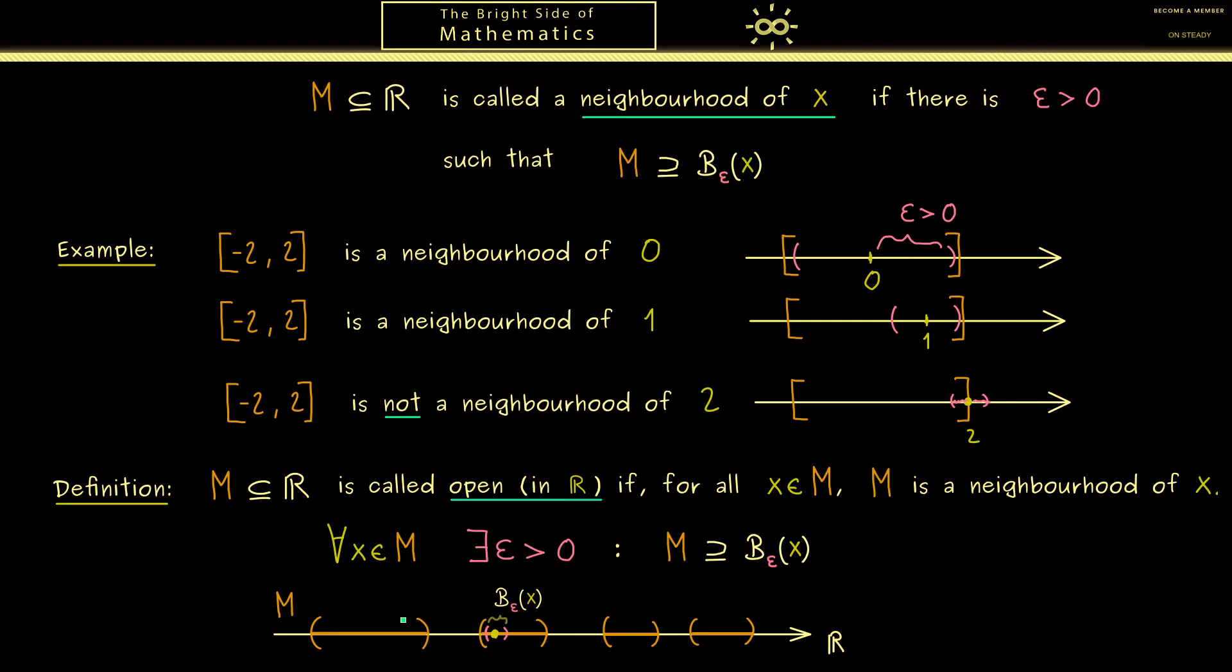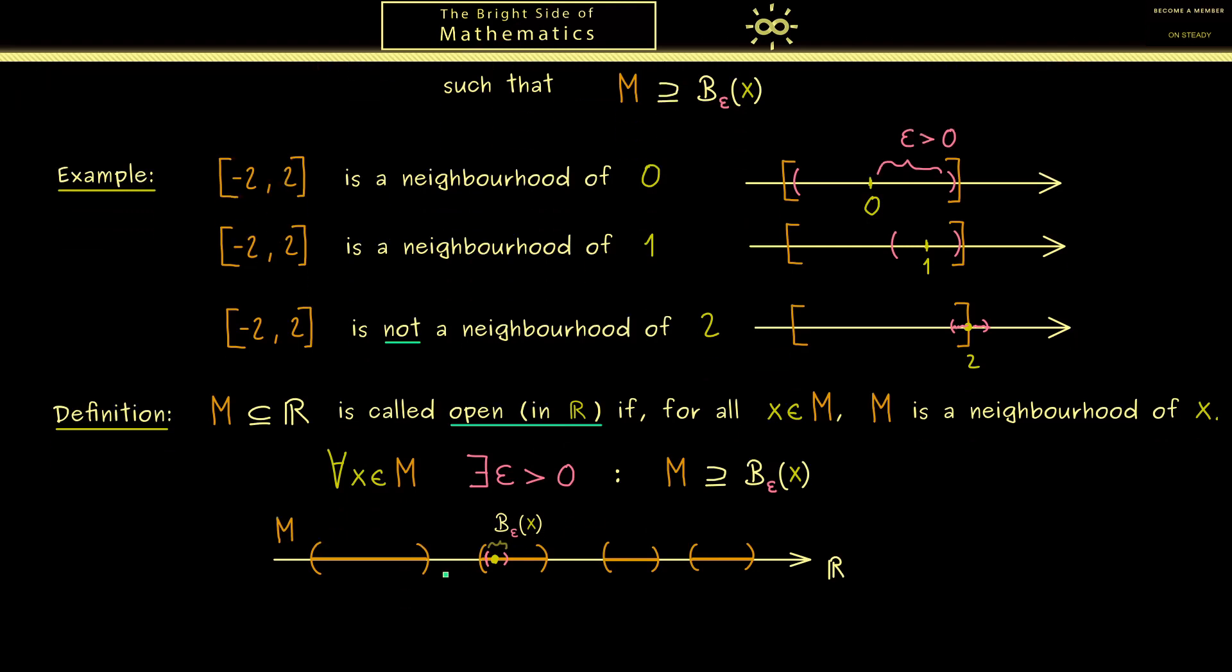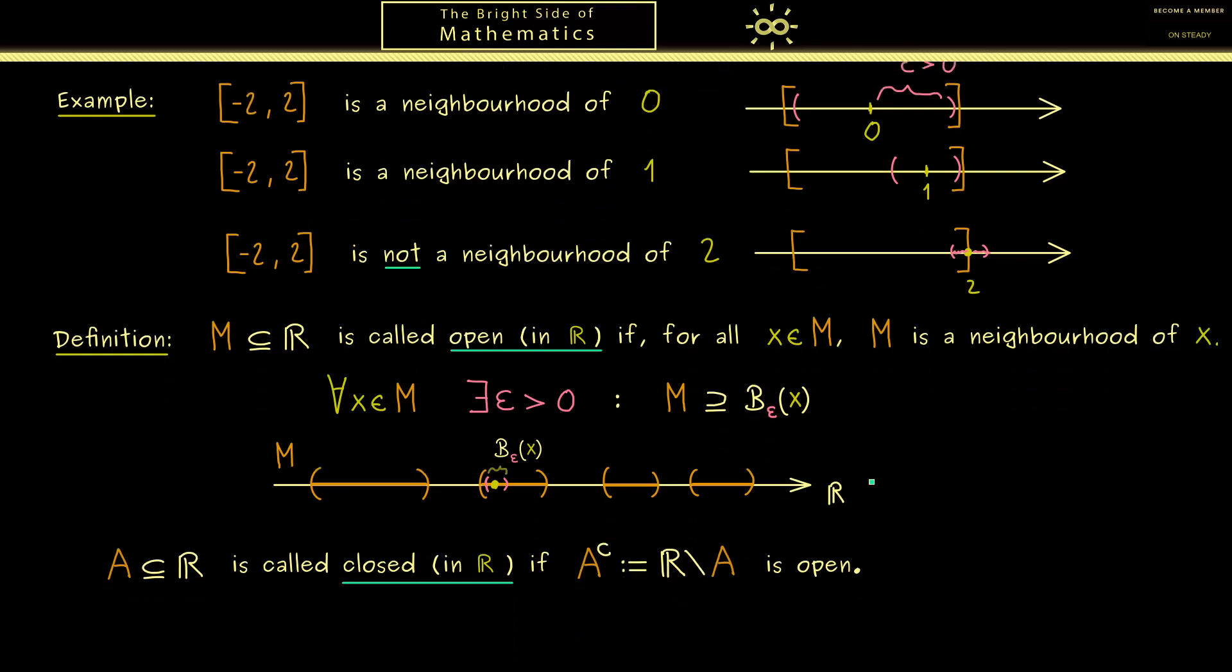Now on the other hand a set that contains all these possible boundary points gets also a special name. Such a set A we call closed, or more concretely closed in R. The definition just reads that the complement of A, A complement, is an open set. For example the interval from before is a closed set because the complement outside is an open set. Now one important thing you should really note here is that open is not the opposite of closed. For example a set could be neither open nor closed, or the other way around it could be open and closed at the same time.